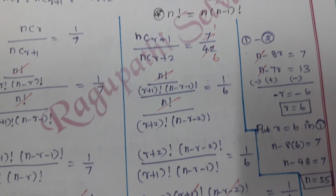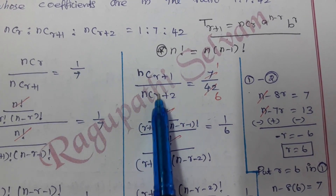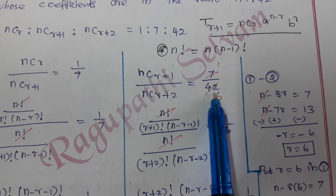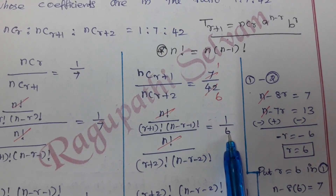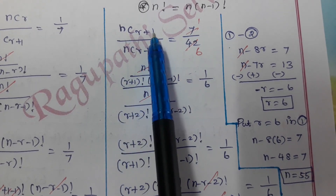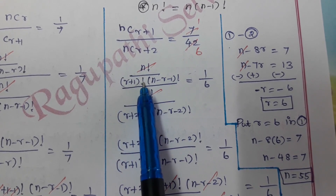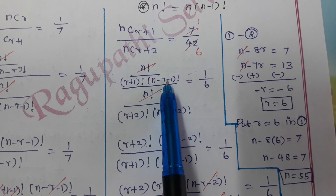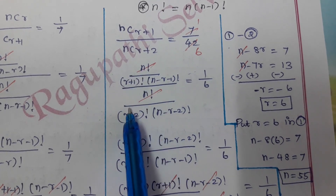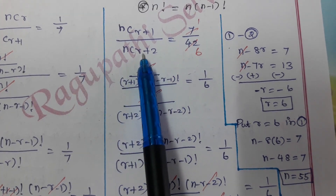For the second ratio, NCr+1 divided by NCr+2 equals 7/42, which simplifies to 1/6. Expanding: NCr+1 = n! / ((r+1)! × (n−r−1)!) and NCr+2 = n! / ((r+2)! × (n−r−2)!). Substituting these into the equation gives us the setup to simplify.